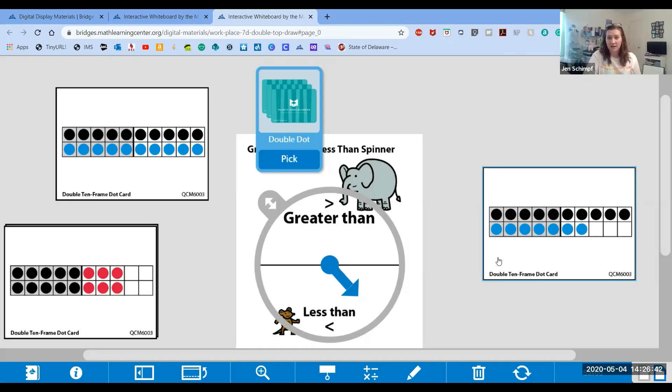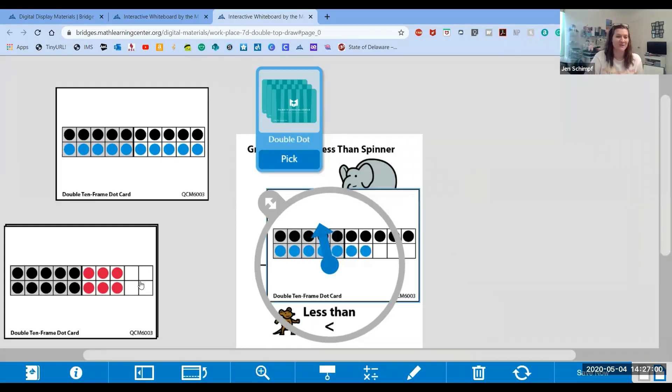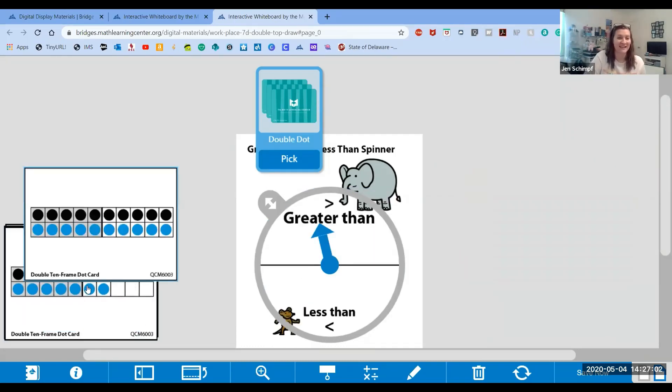Let's look at mine. I have 10, 11, 12, 13, 14, 15, 16, 17. So you have 20 and I have 17. Let's spin. Greater than. Which number was greater? That's right, yours was. So you get both cards again.